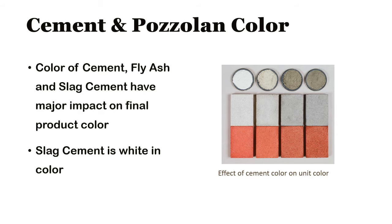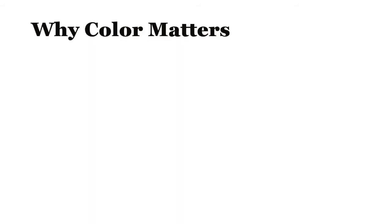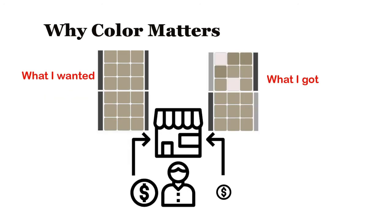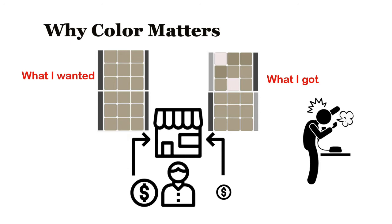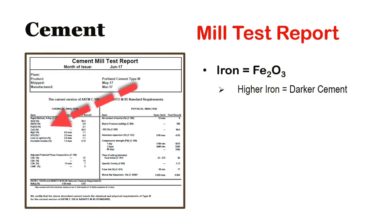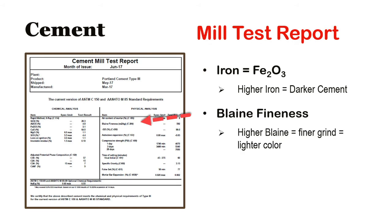Now onto color. The color of your cement, fly ash, and slag have a big impact on the final color of your finished products, even the gray units. Color is a major driver of the consumer purchasing decision, so if it's not as expected, problems may follow. Obviously we use our eyes to check color, but cement mill certs can give clues about color as well. First is the iron, or Fe2O3 content — the higher the iron, the darker the cement. Second is the Blaine fineness — the higher the Blaine, the finer the cement is ground and the lighter the cement color will be. Mill certs are a start, but at some point you need your eyes, and sometimes even eyes need some help.